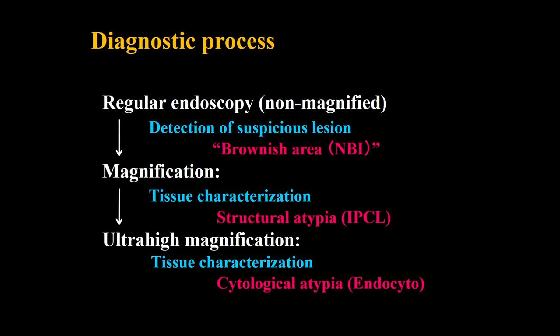This is the diagnostic process: regular endoscopy for detection of the region. Using NBI, we can detect the region as a brownish area. After picking up the region, we perform magnifying endoscopy and evaluate the structure. The indicator is the vascular change. In the near future, there will also be evaluation of cytological atypia.